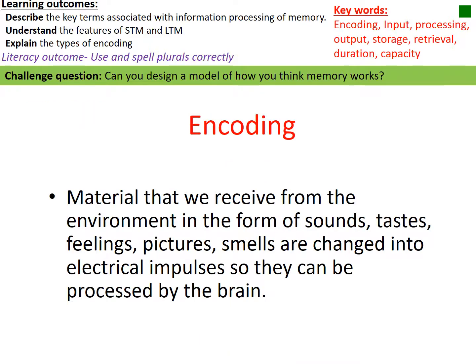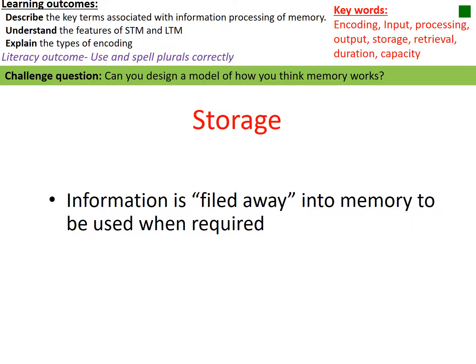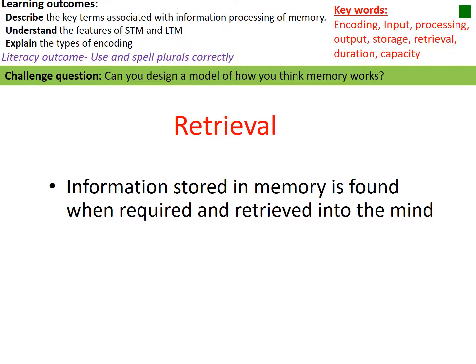Encoding means that once we've received information through our senses — seen, heard, smelled, touched, or tasted something — we change that information into electrical impulses so it can be processed by our brain. From there, we store or file away information to keep it until we require it later. Retrieval is when we go and find that information and bring it back into our mind to use it.